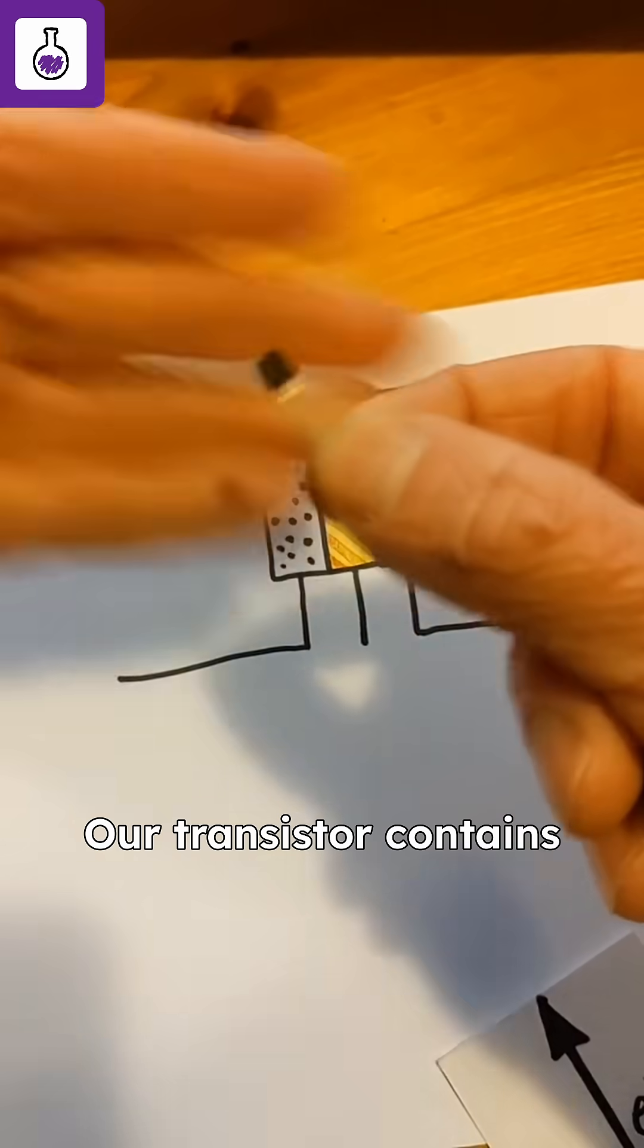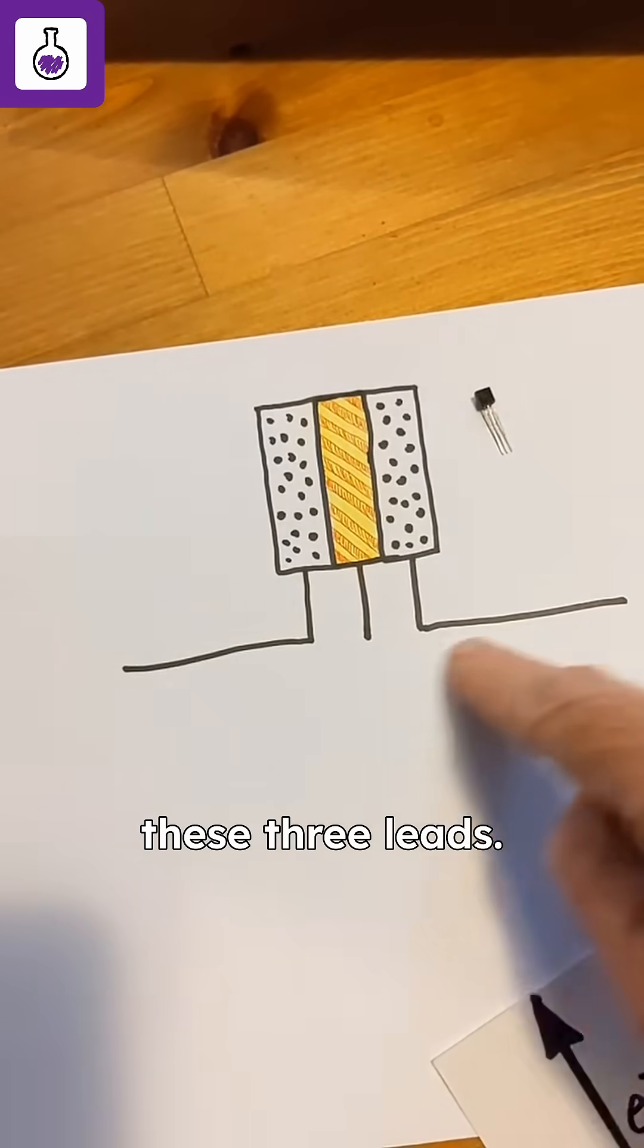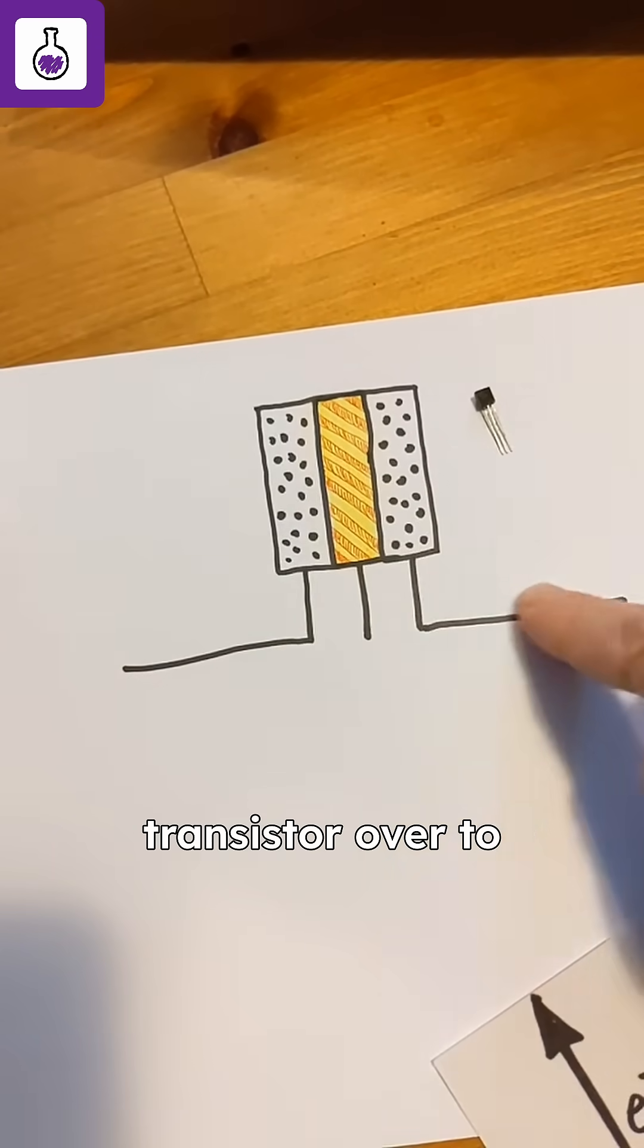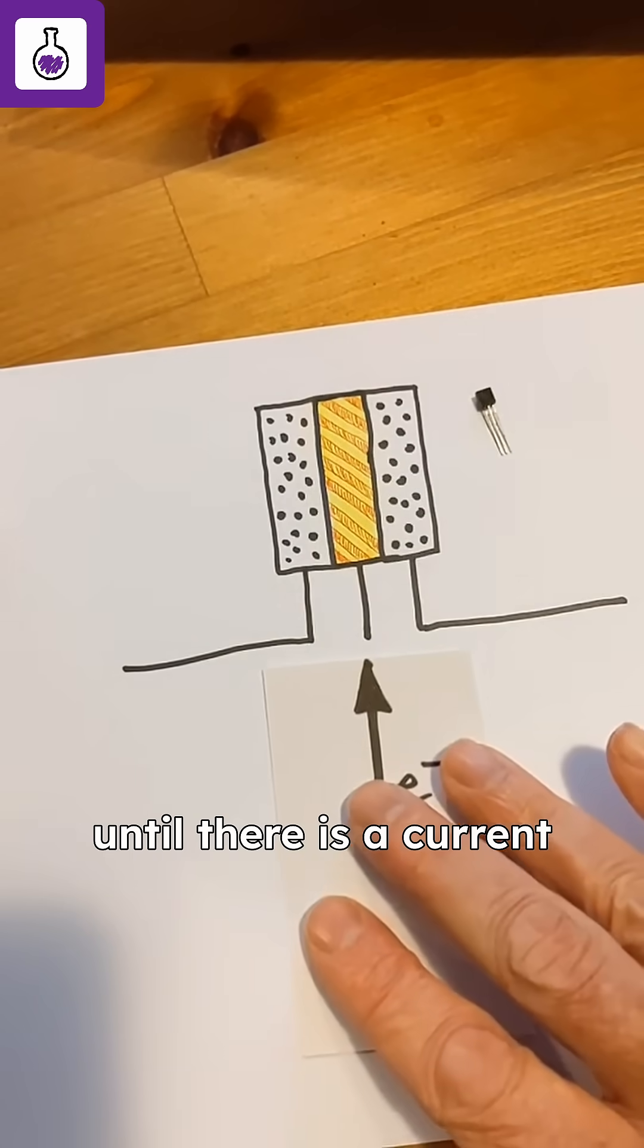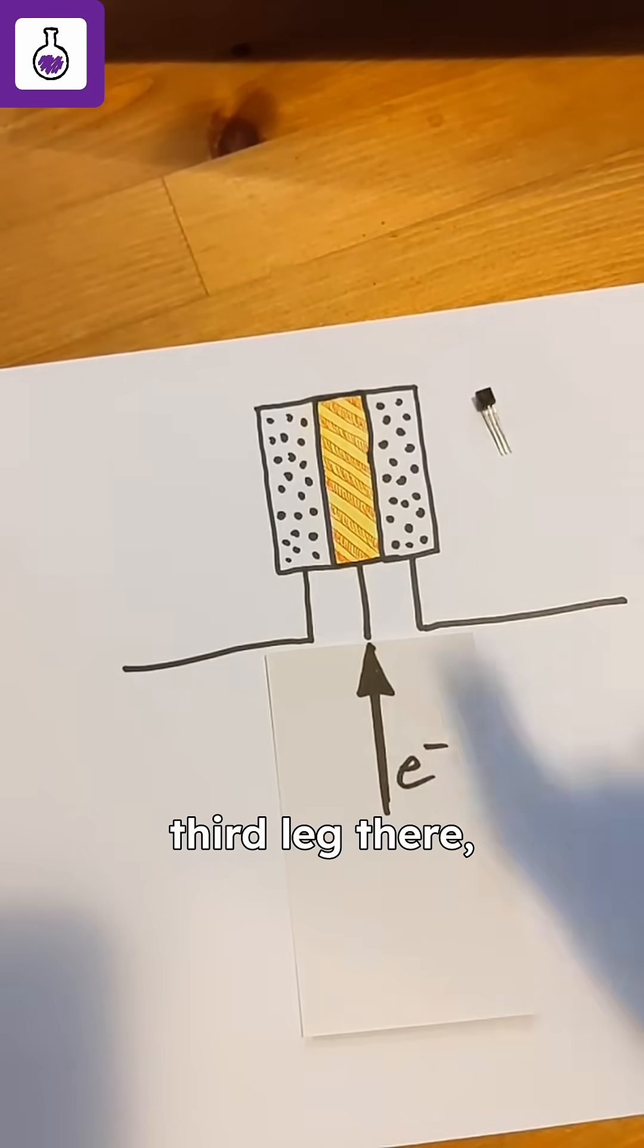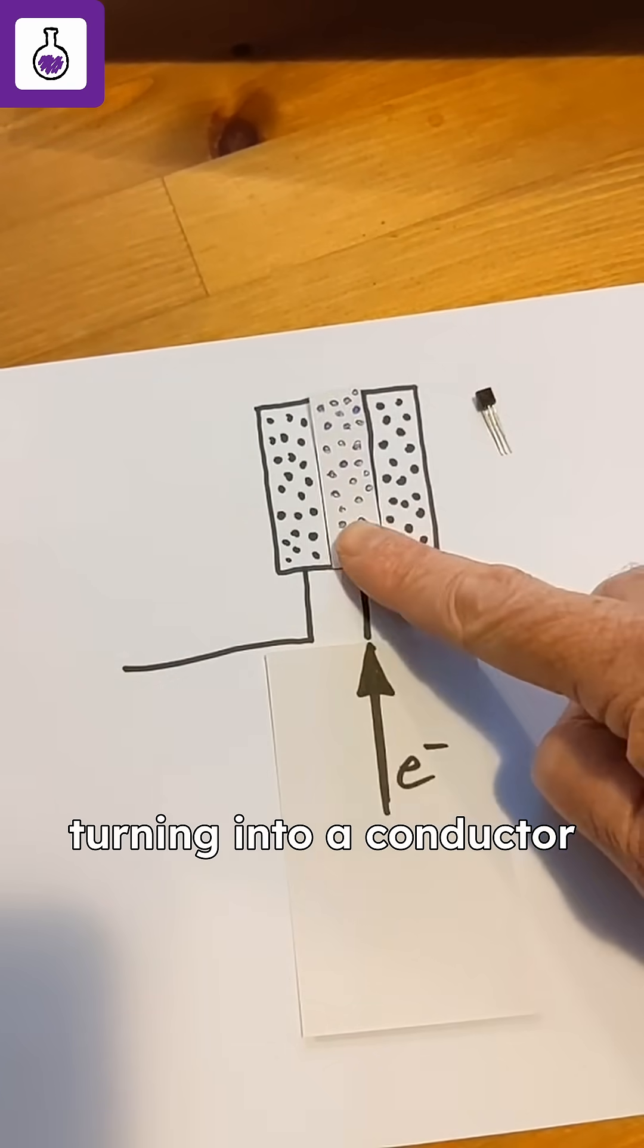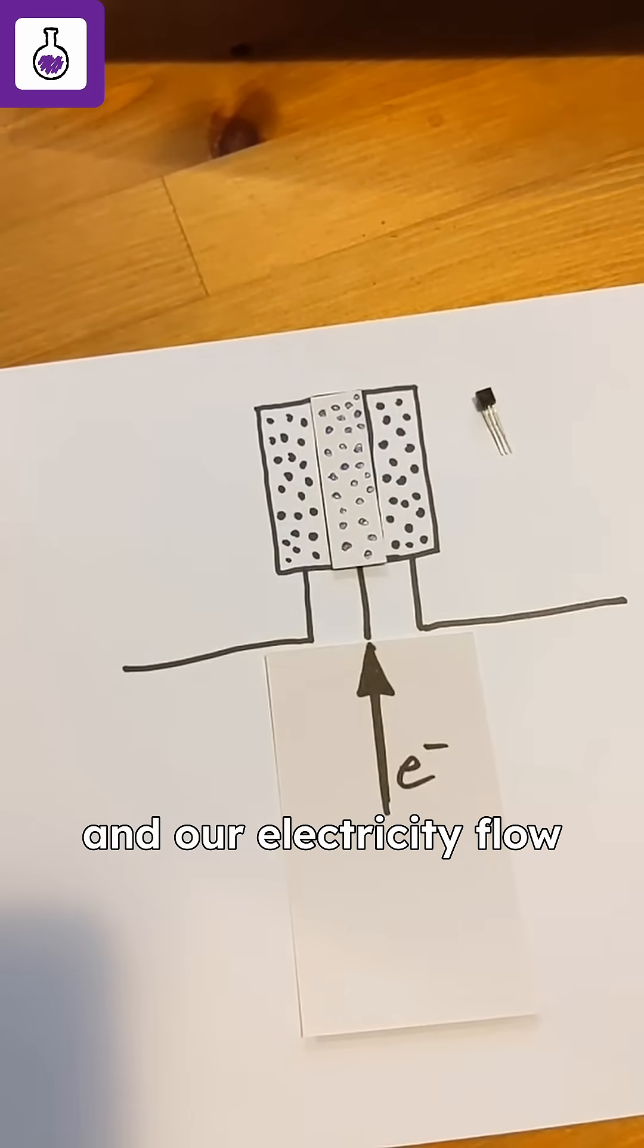Our transistor contains semiconducting material, and we've also got these three leads. Essentially what we're trying to do is get electricity to flow from one side of the transistor over to the other side, but that won't happen until there is a current put onto that third leg there, whereupon we end up with that semiconductor turning into a conductor, and our electricity flow can happen.